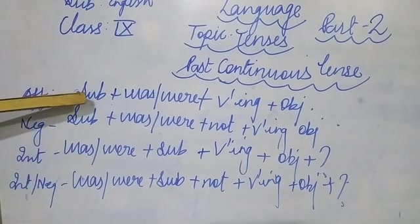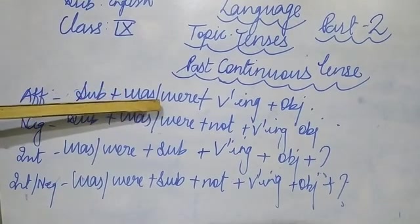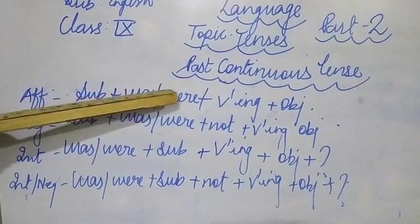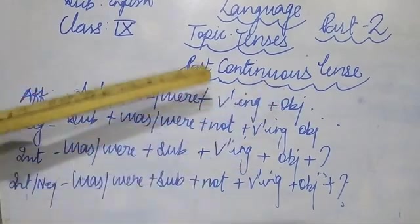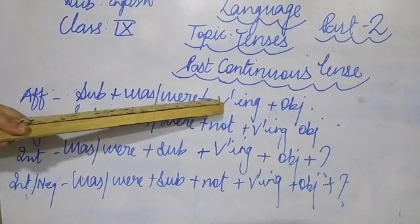In the affirmative sentence, you have to form like this: subject plus was, were. As we have used is, are, am in the present continuous tense, but here we have to use was, were, along with first form of verb, ing and object. Always remember children, continuous tense carries first form with ing.